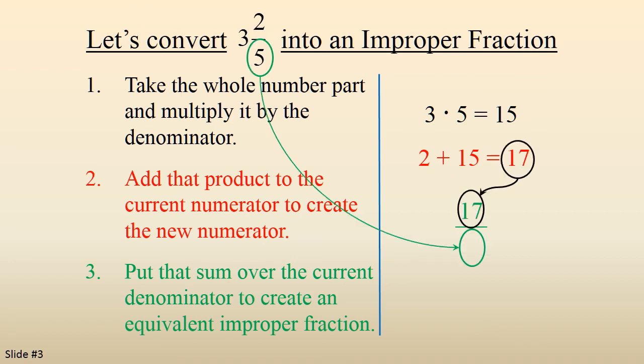We put that sum over the current denominator, which is a 5, to create an equivalent improper fraction of 17 fifths. So 3 and 2 fifths becomes 17 fifths.